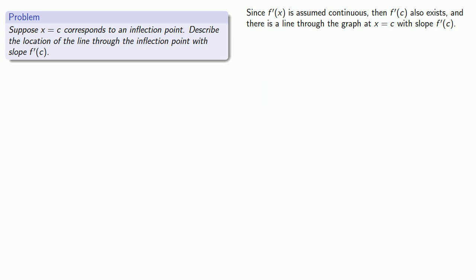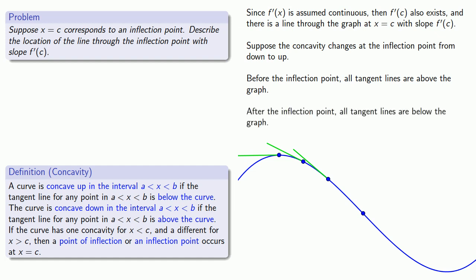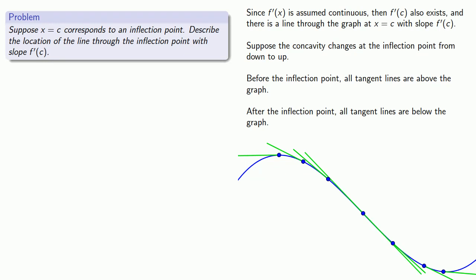What does it look like? We know the concavity is changing. Suppose the concavity changes at the inflection point from down to up. If we're a little bit before the inflection point, all our tangent lines are going to be above the graph. When you draw the tangent lines, you don't want to draw them too long because they'll clutter up the picture, so let's draw them short and away from the inflection point. After the inflection point, all of our tangent lines are going to be below the graph. This suggests that the backward part of the line through the inflection point with slope f prime of c is going to be above the graph, while the forward part is going to be below the graph — meaning our line actually passes through the curve. A similar argument can be made if the concavity changes from up to down.